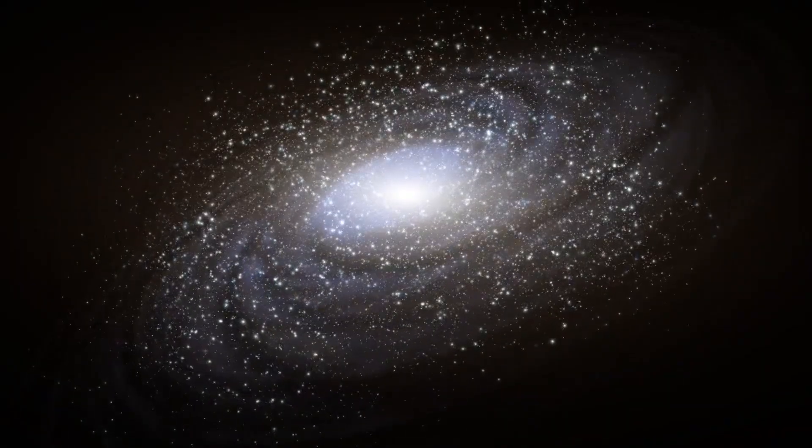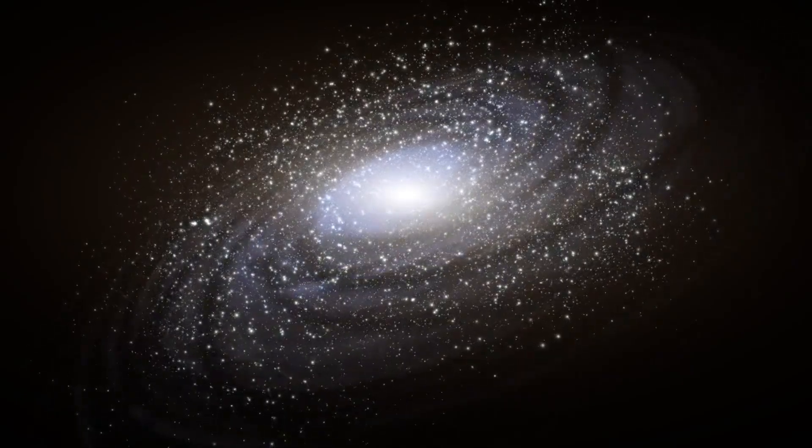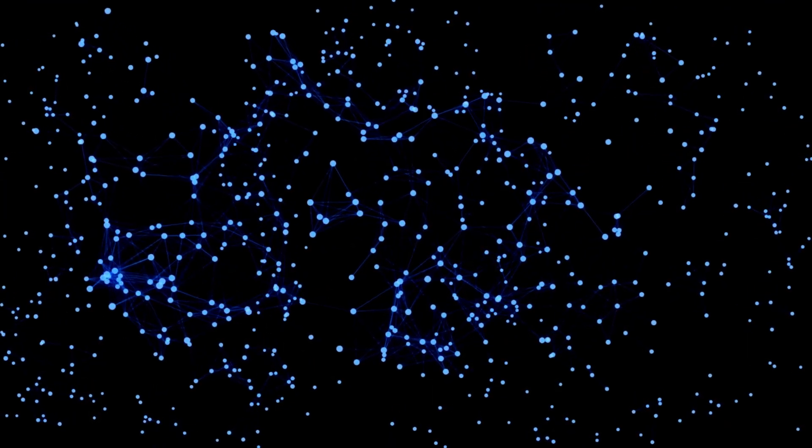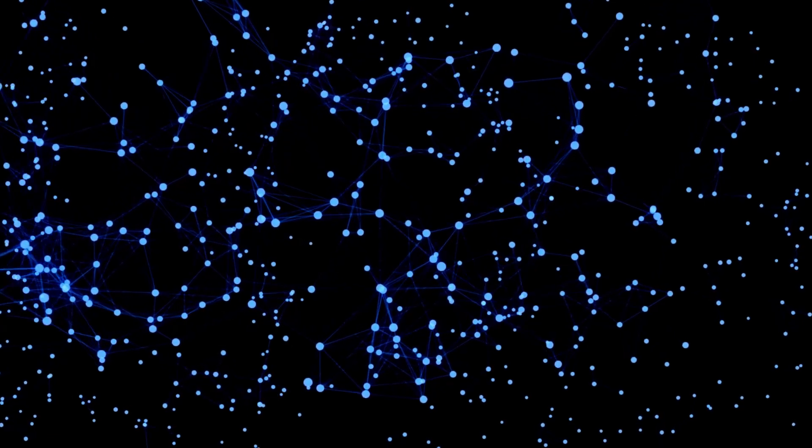When we look toward the night sky, we see proof of this hot beginning with galaxies spreading out this way and that from an early stage point. However, for what reason did this happen? Furthermore, was there a period before this thick, hot start?